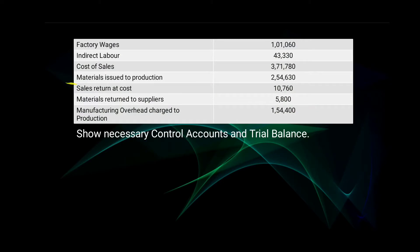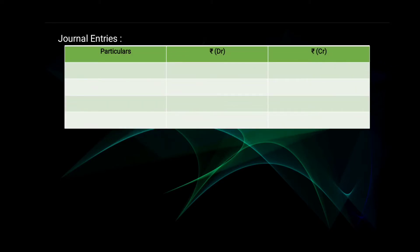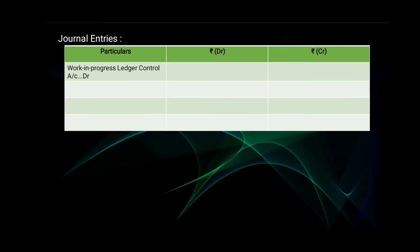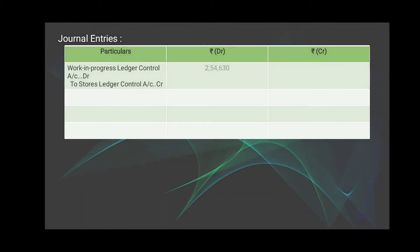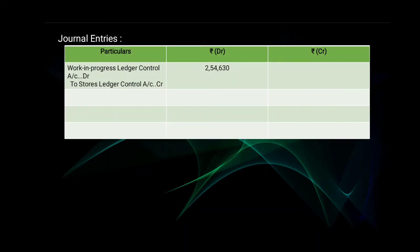Next is materials issued to production; the amount is given as 2 lakh 54,630. The journal entry will be: Work in Progress Ledger Control Account debit, to Stores Ledger Control Account — amount 2 lakh 54,630 on the debit and on the credit side.